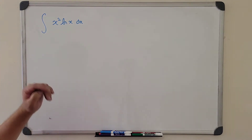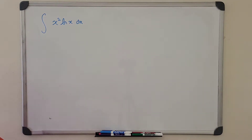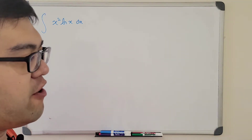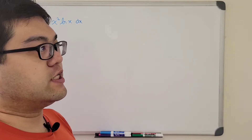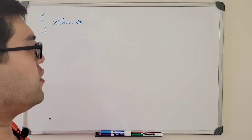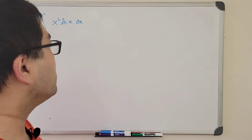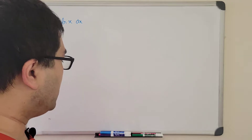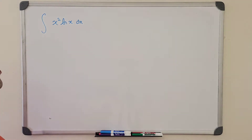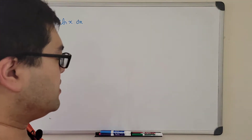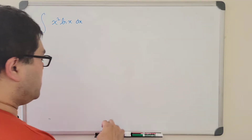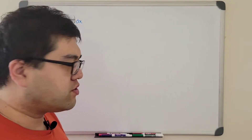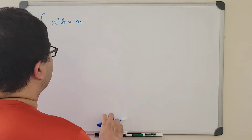We're going to take the antiderivative of x squared times ln of x dx. We know that we have the general expressions of the antiderivative of x to the n power. But we actually don't know what the antiderivative of ln of x is. So let's see how we're going to do this problem.